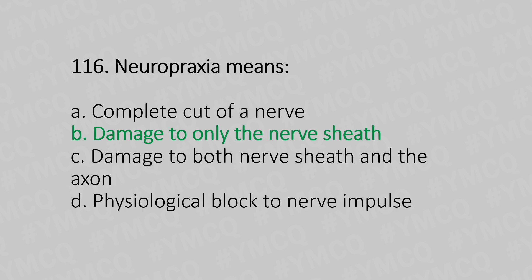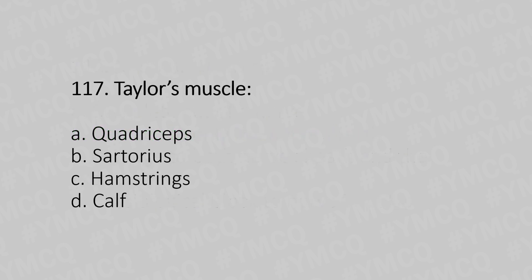Now let's move to question number 117. Taylor's muscle. Option A, cordyceps. Option B, sartorius. Option C, hamstring. Option D, cough. And the answer is Option B, sartorius.